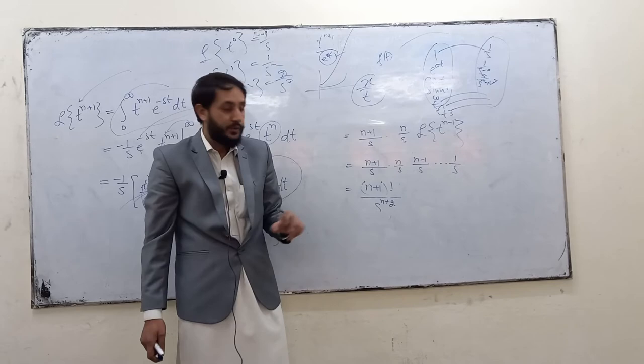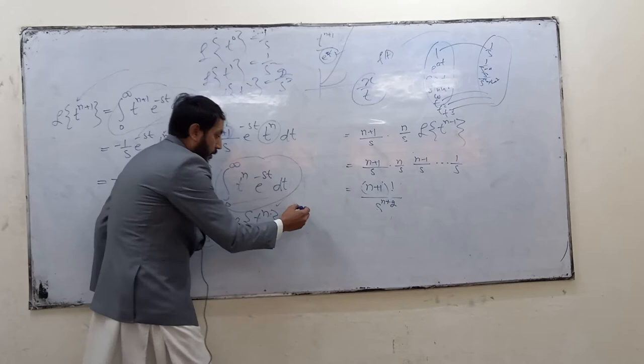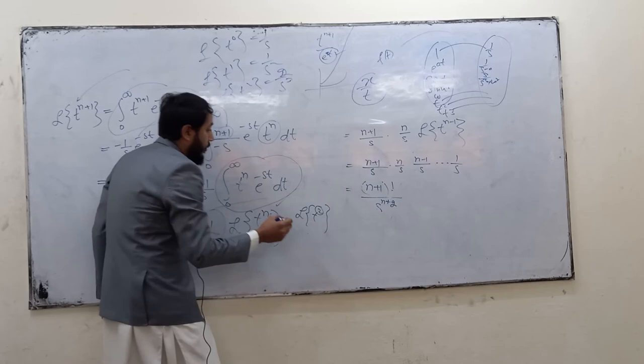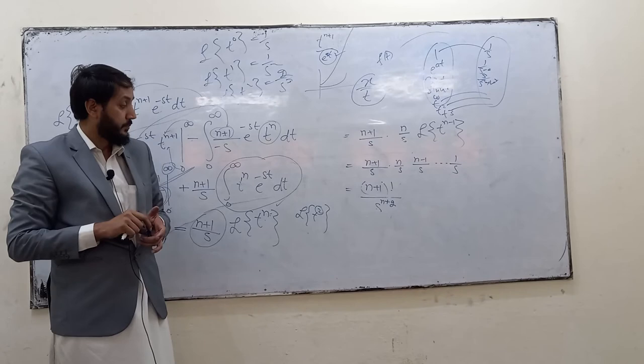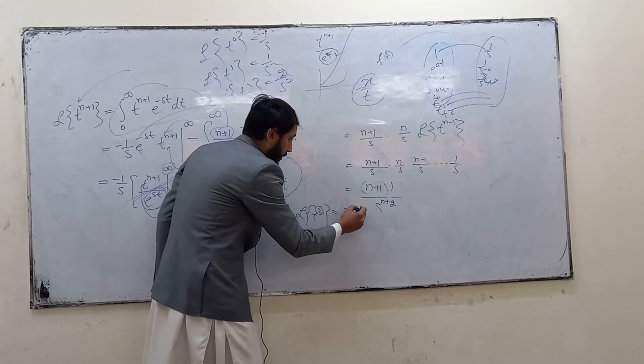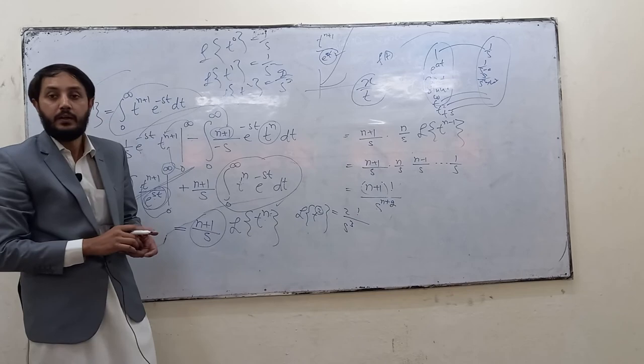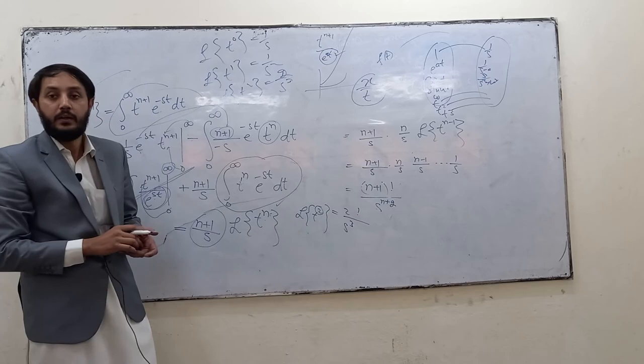So, this is the general formula we have derived. You may ask me, sir, what is the Laplace transform of t squared? I am asking you. Here you have what? You have 2. So, here we will have 2 factorial. And here you will have? Increase 1. If you have, suppose, the Laplace transform of t cubed, can you tell me what will be the answer? 3 factorial which is 6, divided by s^4.